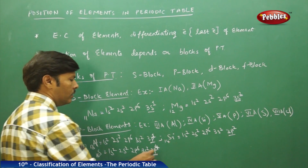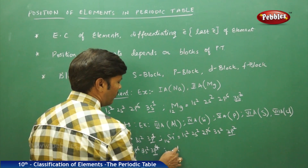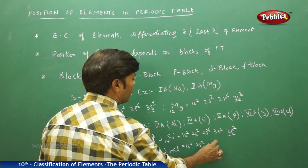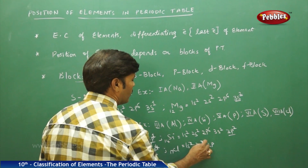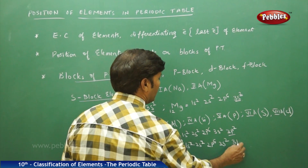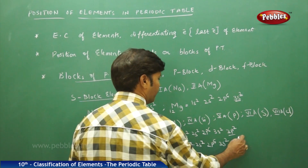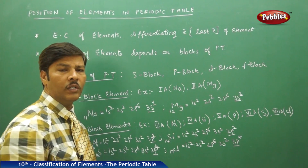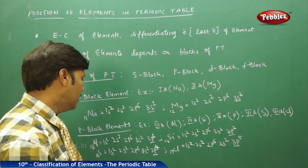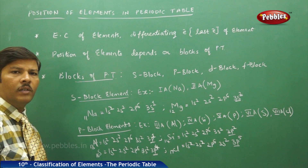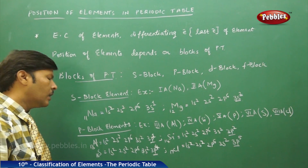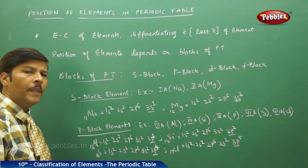For chlorine (atomic number 17): 1s², 2s², 2p⁶, 3s², 3p⁵. The 17th differentiating electron of chlorine enters the p-orbital. Similarly, the 16th electron of sulfur, the 14th of silicon, and the 13th of aluminum all enter the p-orbital, confirming they are all p-block elements.